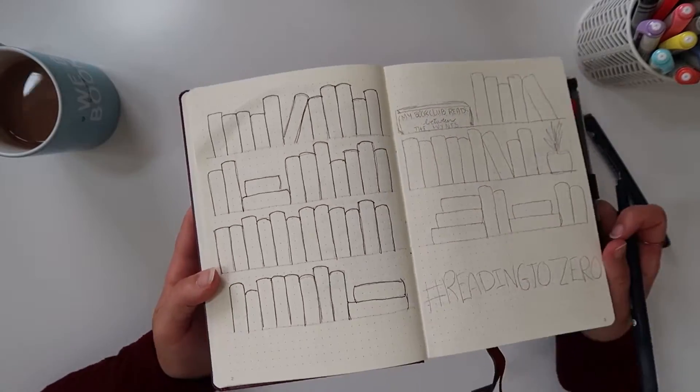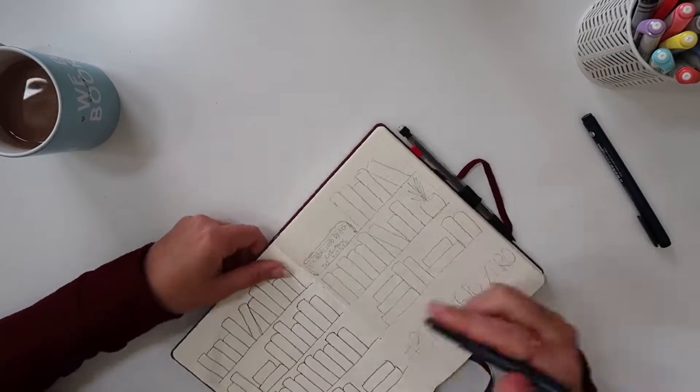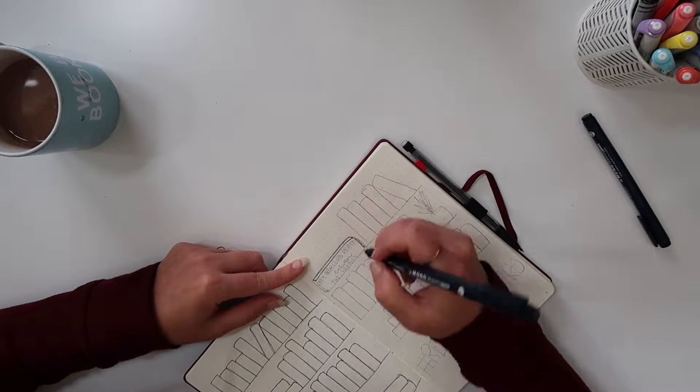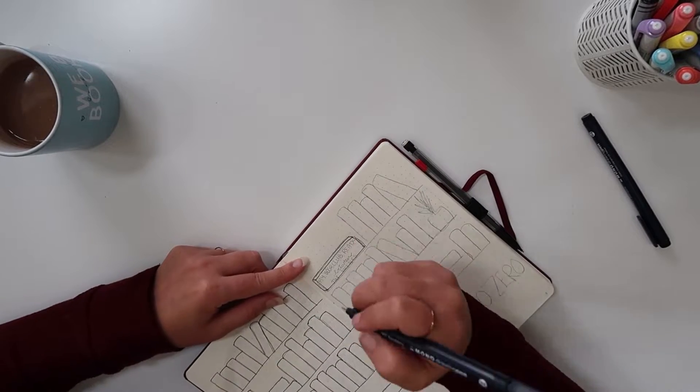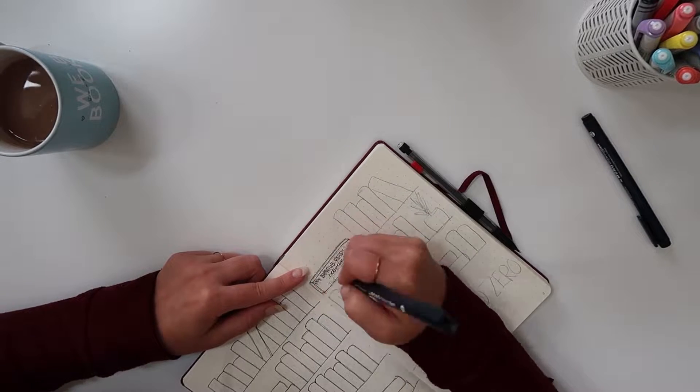I think I have around like 67 spots on this page in order for me to read that amount of books and then write the titles in. I do want to color the books in in a rainbow because that's how I have my actual shelves in real life.